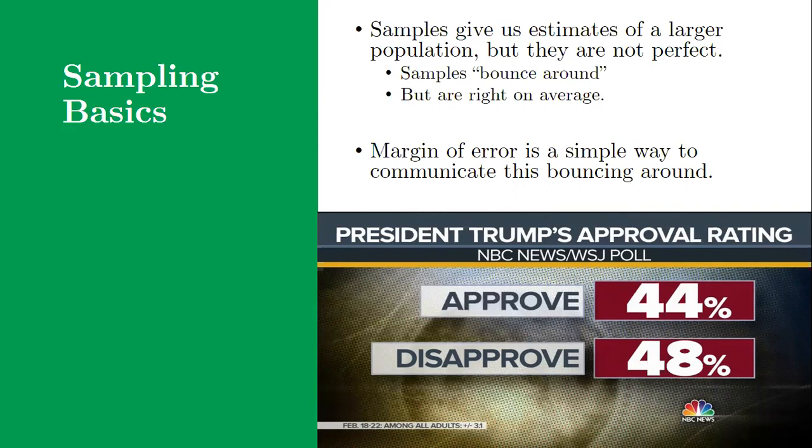But here's what we know about random samples. They are correct on average, which means if you did the process over and over and averaged all those different samples together, they'd be pretty accurate. But any individual sample might bounce around, it might be too high or too low. The good news is that mathematically we can understand that bouncing around and work with that in a reasonable way.